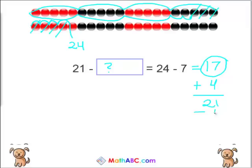And now, if we subtract 4 from 21, we get 17. So the answer is 21 minus 4 equals 24 minus 7.